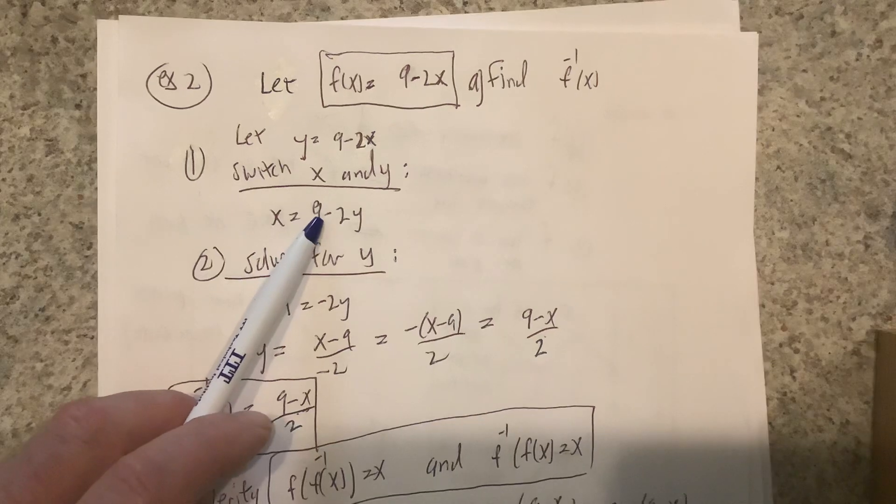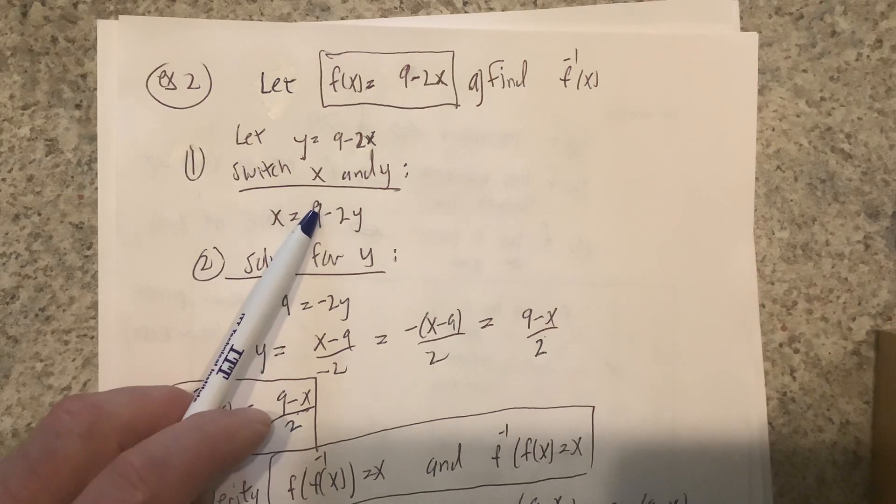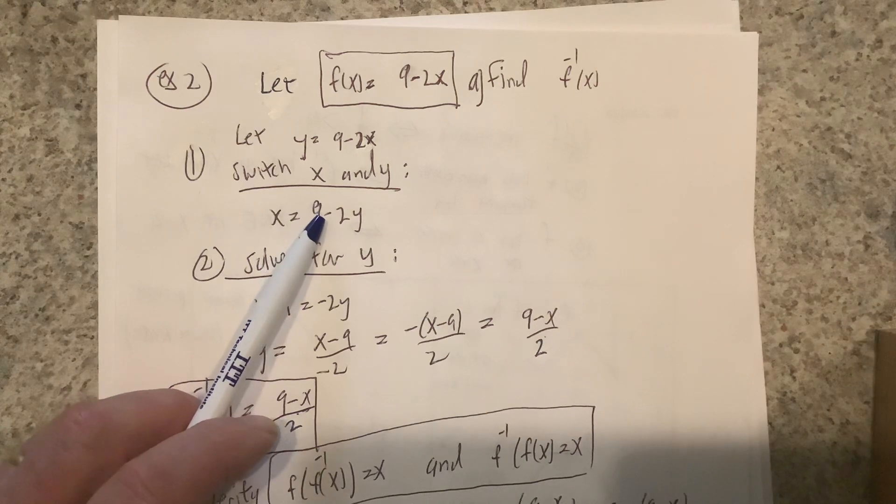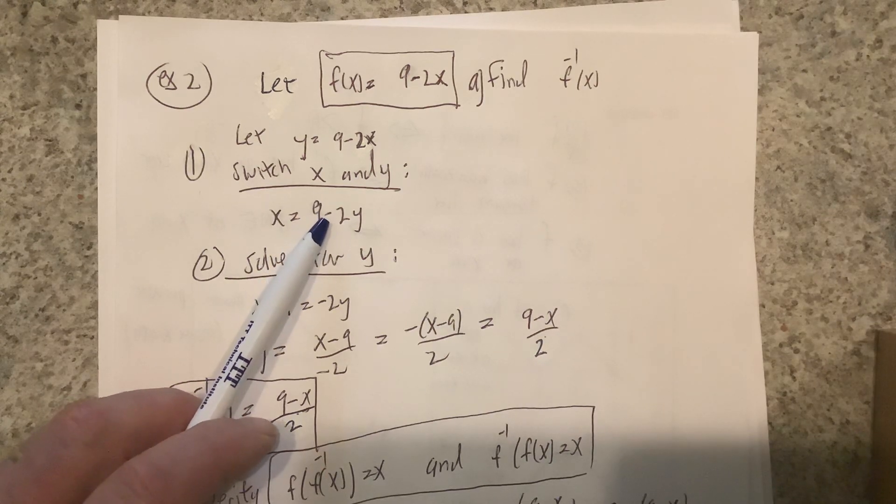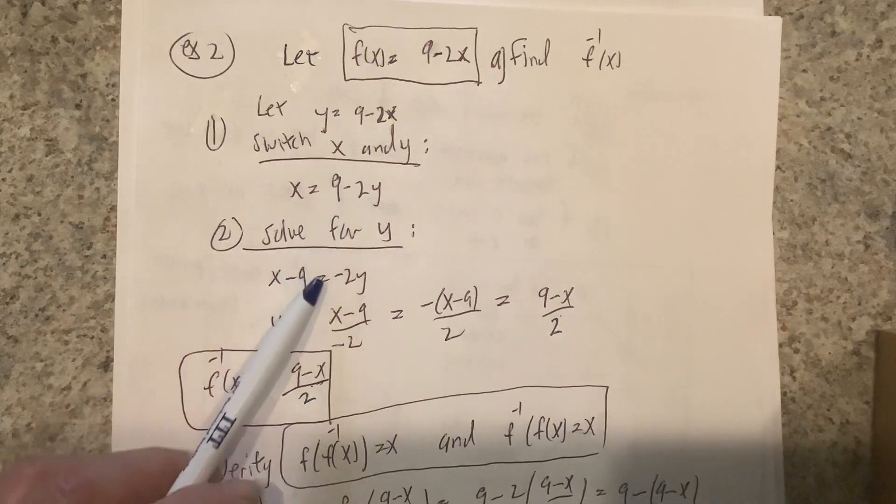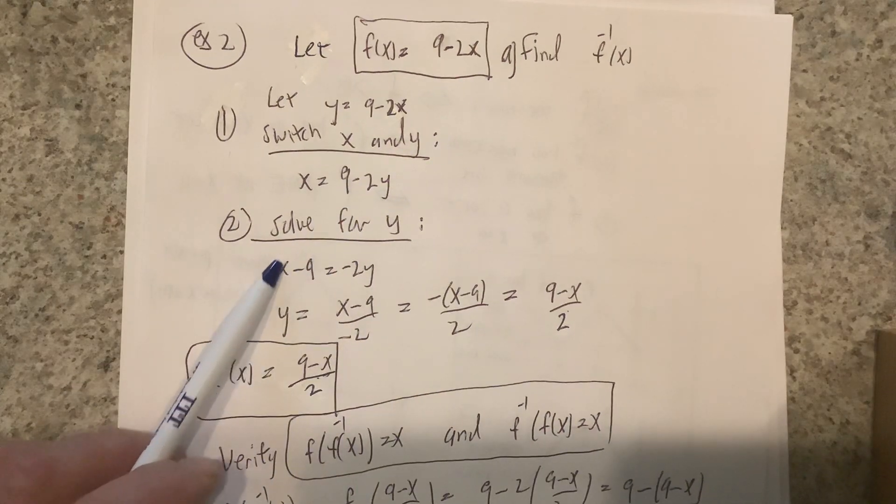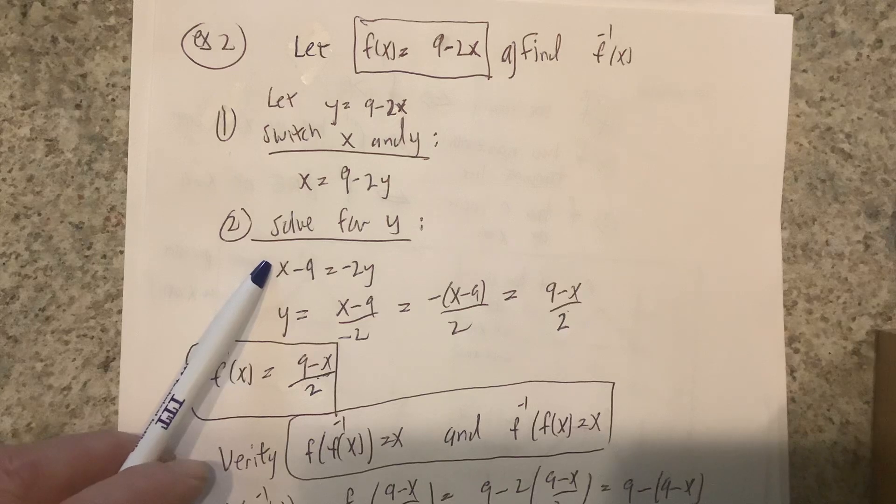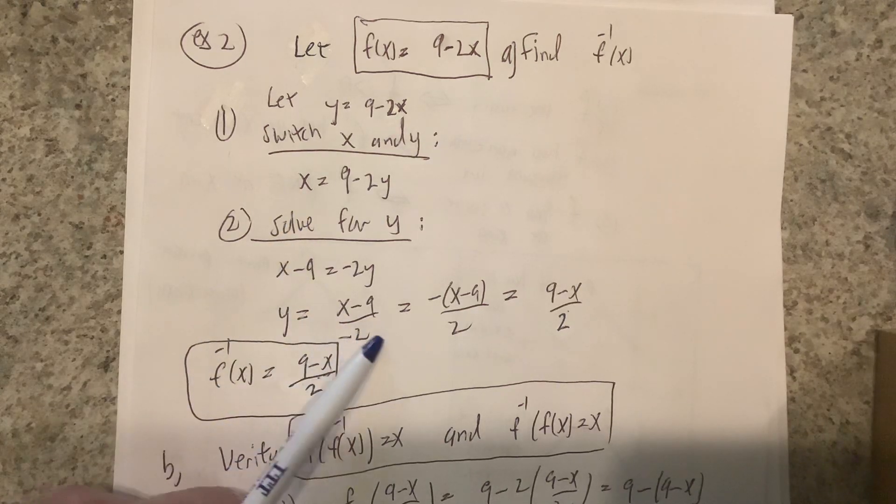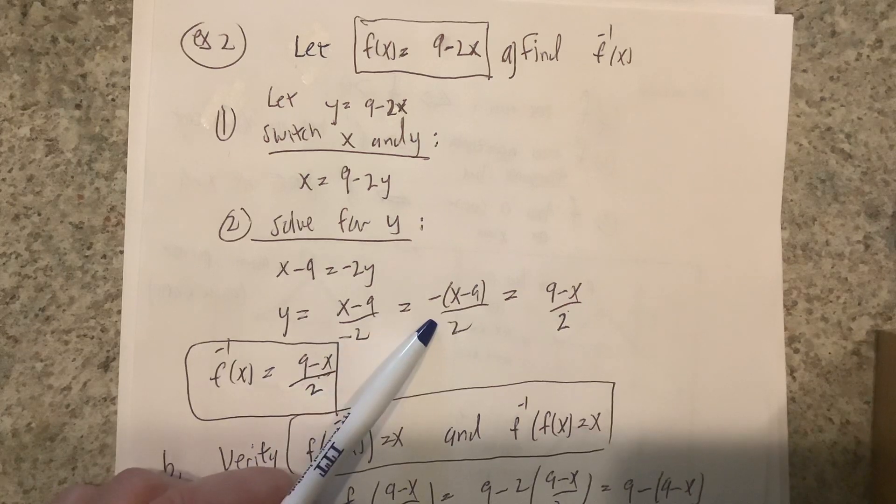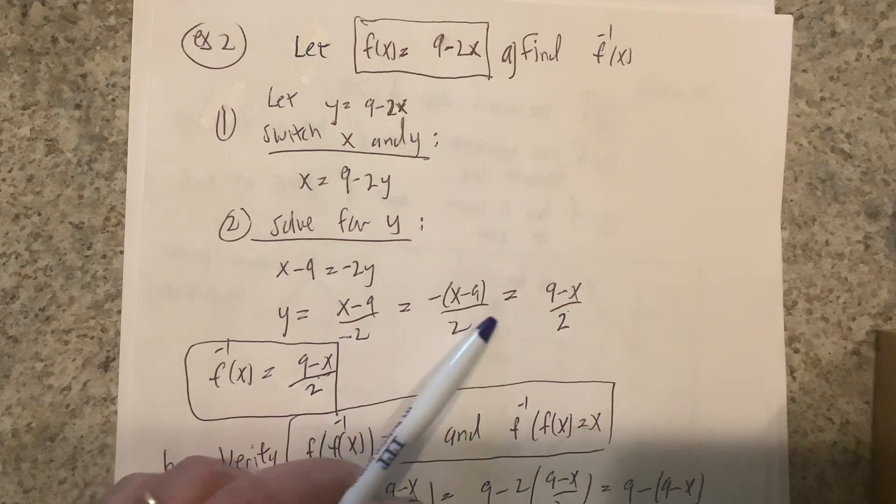Remember, if you recall when we found the inverse with tables and with graphs, we were switching x and y coordinates—that's how you form the inverse. Then solving for y in this case, you would subtract nine and divide by negative two. When you get to here, you could move the negative up and distribute the negative, which changes the order.